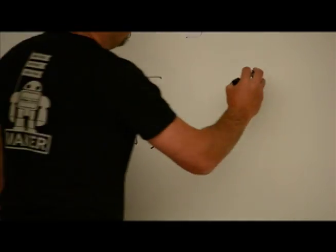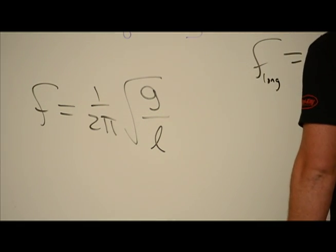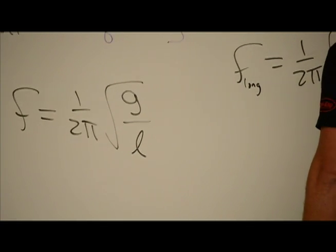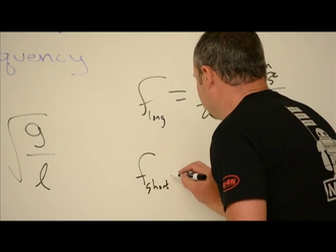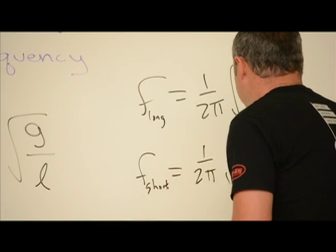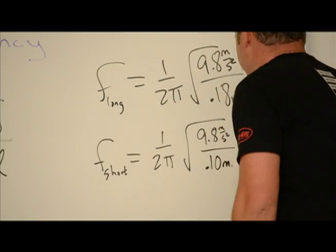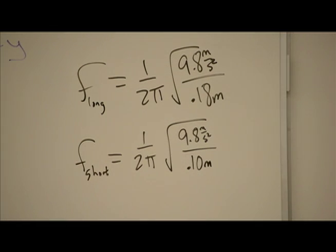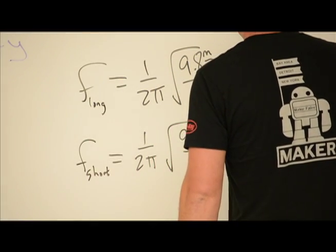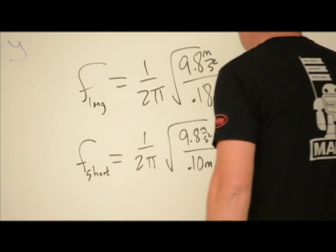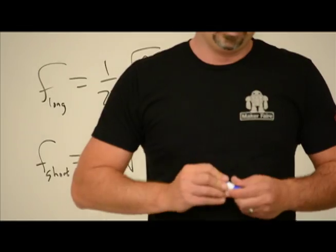Now for us, the frequency of the long will equal 1 over 2π, square root of 9.8 meters per second squared, all divided by 0.18 meters. And the frequency of the short, same thing but different length, all over 0.10 meters. And if we do that calculation, you'll get this answer of about 1.2 hertz for this one and 1.6 hertz for that one.